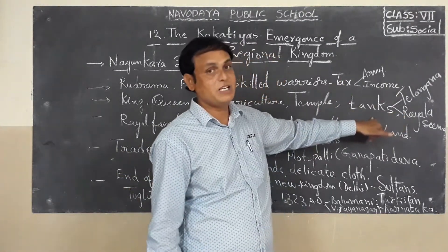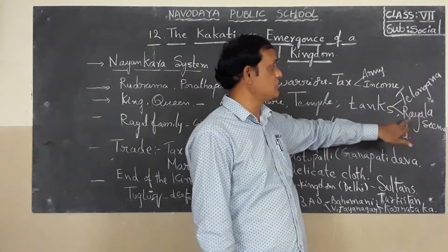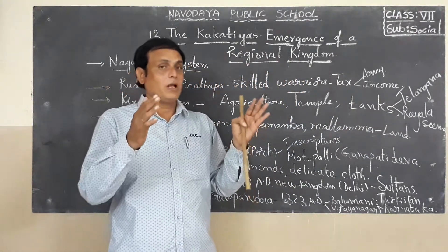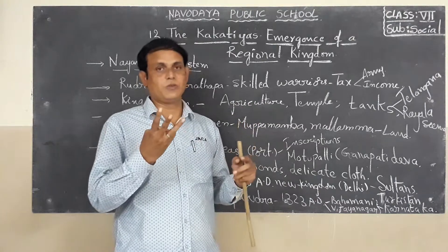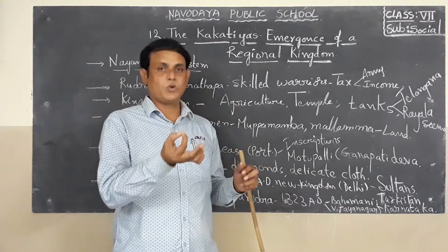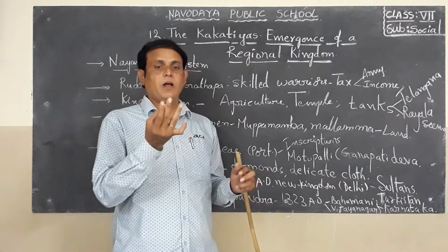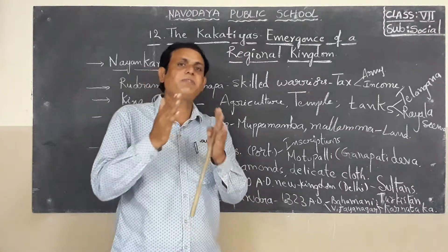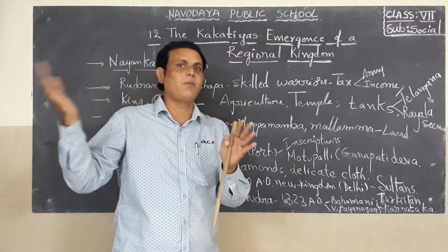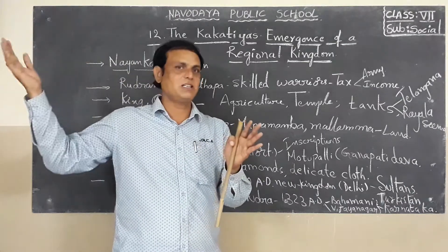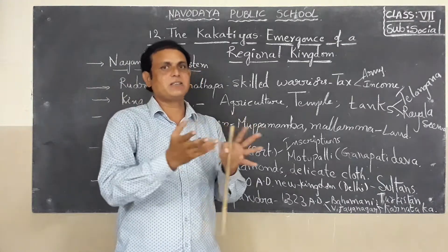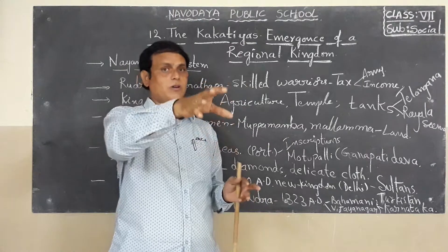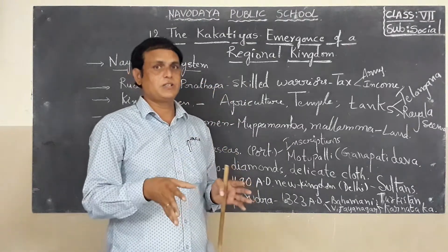The Kakathiyas built many tanks in the Telangana region and also the Rayalaseema region. Our AP has three regions: coastal region, Telangana region, and Rayalaseema region. But recently, Telangana was bifurcated from AP state and formed as a new state — Telangana state. The remaining two regions — coastal and Rayalaseema — are now present in our AP state.